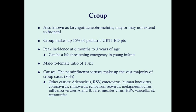The parainfluenza viruses make up 80% of causes. Other causes include adenoviruses, RSV, enterovirus, coronavirus, echovirus, and influenza viruses. Much rarer in the U.S. are measles virus, HSV, varicella, and mycoplasma pneumonia. For the test, what you should know is that parainfluenza virus is the chief culprit of croup in the U.S., accounting for 80% of cases.